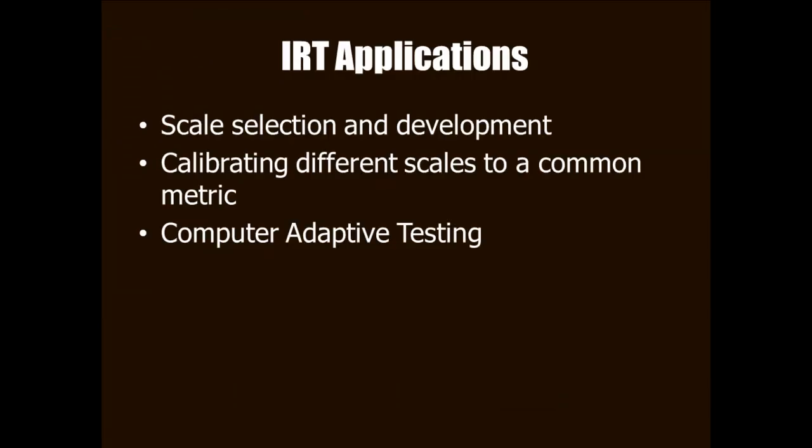There are many item response theory applications, but in this module I'm just going to concentrate on three of them. First, using an item response theory model to select a scale or to develop a scale. Using IRT to create a common metric so that the scores of two different scales that measure the same or similar constructs can be associated with each other. And then finally using item response theory in the context of computer adaptive testing.